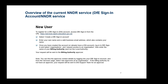Once logged into DfE Sign-in, you'll need to request access to an organisation to attach your billing authority to your account. Navigate to the organisations section and type in the name of your billing authority. If you already have a DfE Sign-in account, double-check that you are attached to the billing authority specifically, as that is what is required to do your NNDR return or claim.